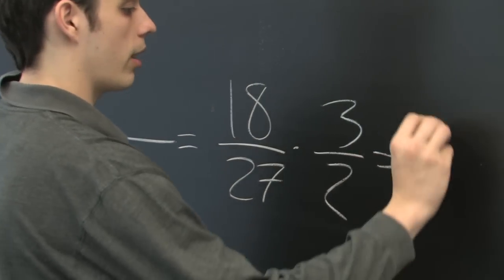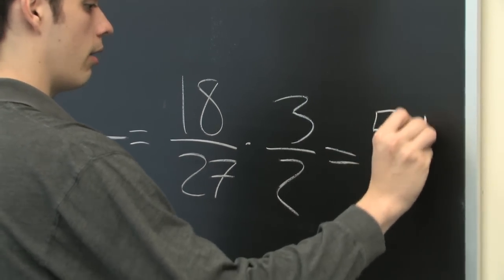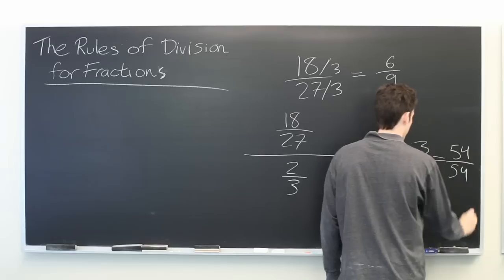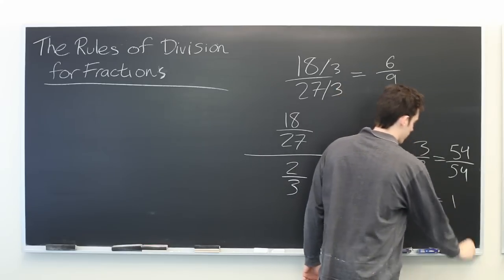From there, you'll quickly find that this is 54 over 54, which is just equal to 1.